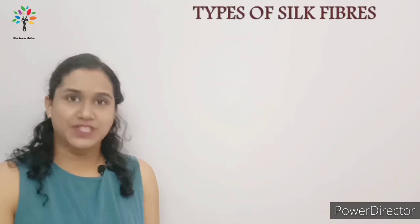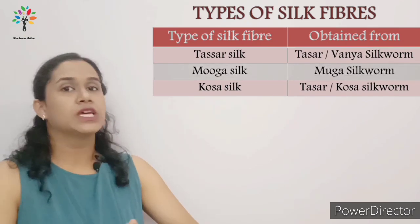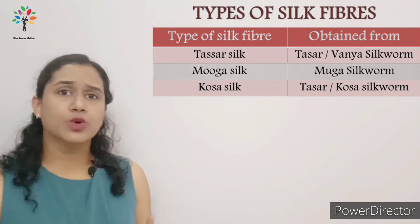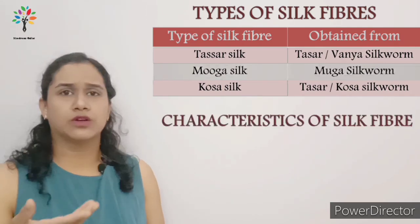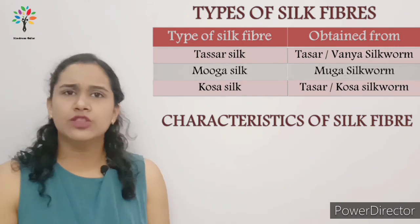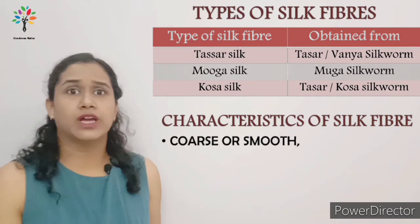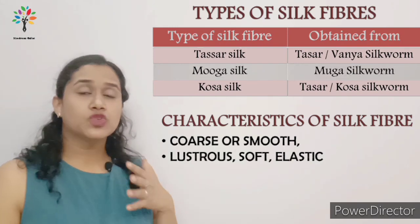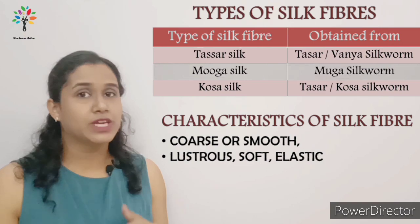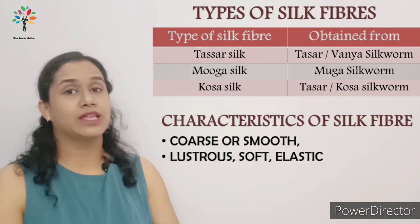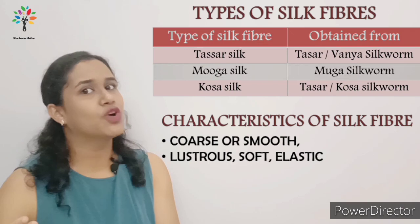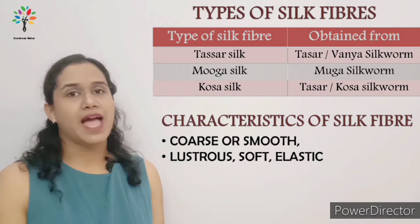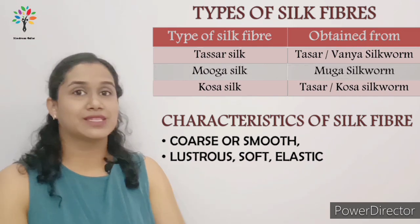There is a table showing different types of silk. Even if you look at the clothes that your mother, father, brother, or sister are wearing — if they have any silk garment — you can see there are different types of silk fibers. We get different types of silk fibers from different types of silk moths or silk worms, as mentioned in this table.